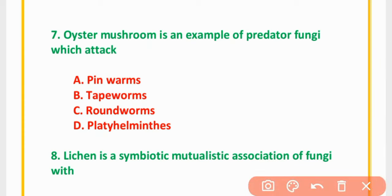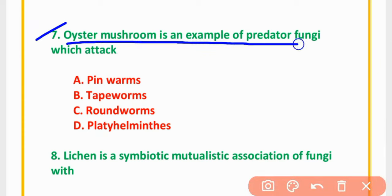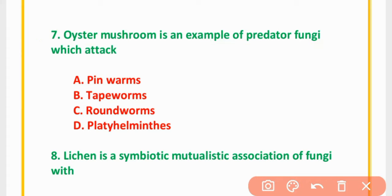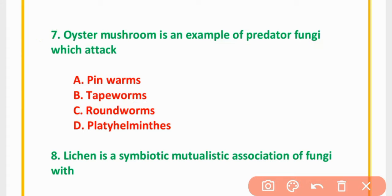MCQ Number 7: Oyster mushroom is an example of predator Fungi which attacks — pinworms, tapeworms, roundworms, or platyhelminthes. The correct option is option C: Roundworms.